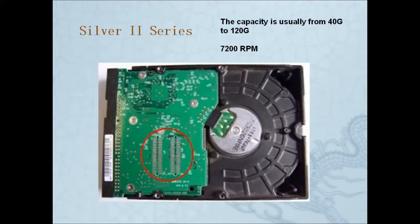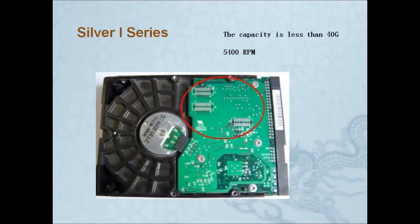Let's look at Silver 2. The capacity of Silver 2 is usually from 40GB to 120GB. The only difference between Silver 1 and Silver 2 is the layout of the marks on the PCB — Silver 2 has a different dot arrangement from Silver 1. That's the only difference between them.